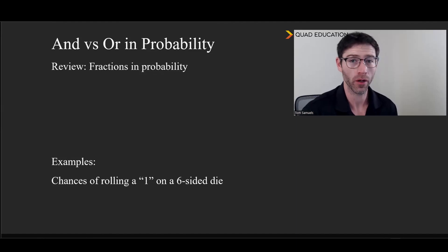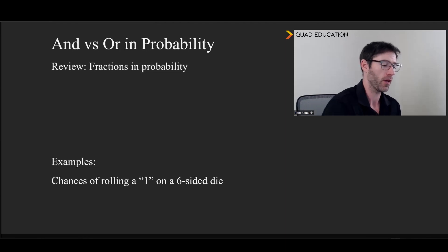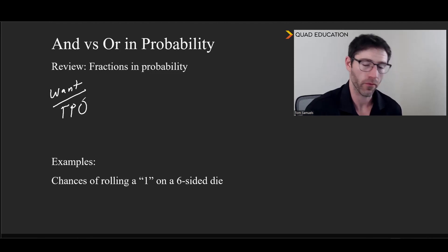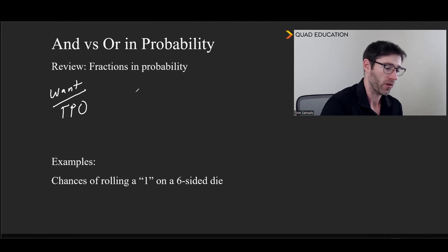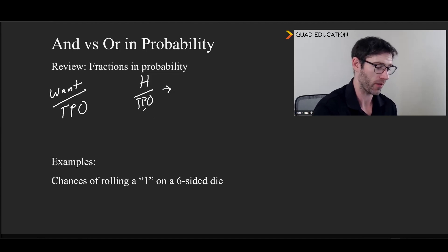We're talking about 'and' versus 'or' in probability. First, we want to make sure that we review what we mean. We're talking about probability specifically with fractions in probability, and it's pretty straightforward. Effectively, a fraction in probability is going to be what we want to happen on the numerator and the total possible outcomes of the set of whatever that situation is in the denominator. This is not an official acronym, this is just something that I use - TPO.